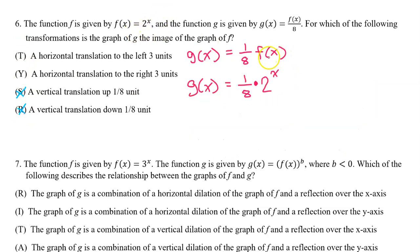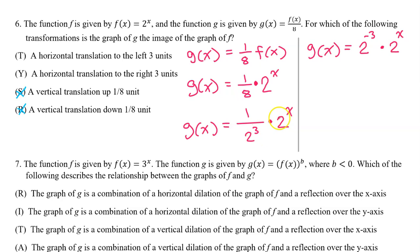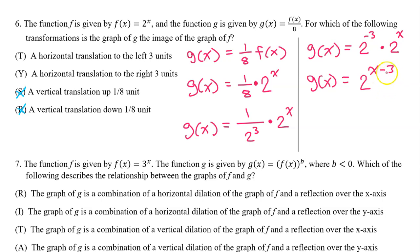Substituting 2 to the x power in for f(x) gives us this. We also know that 8 is the same as 2 to the third power. So let's make that substitution to have like bases. 1 over 2 to the third power is the same as 2 to the negative 3 power. When you multiply with like bases, you add the exponents. x plus negative 3 is x minus 3. So g(x) equals 2 to the x minus 3 power, which is a horizontal translation by positive 3 — that is, 3 units to the right. The answer is Y.